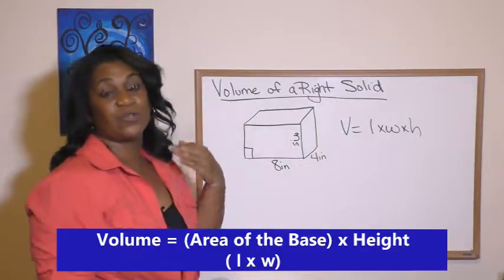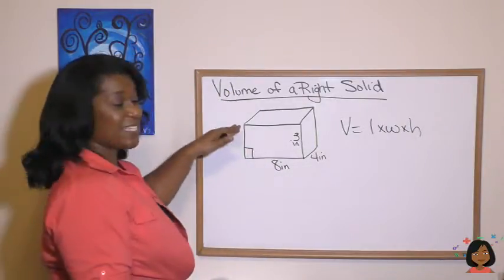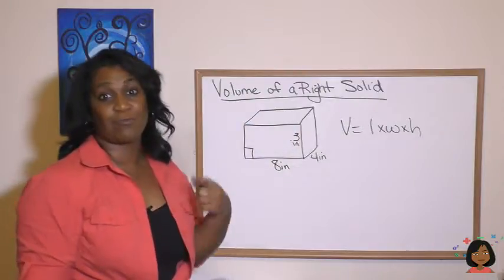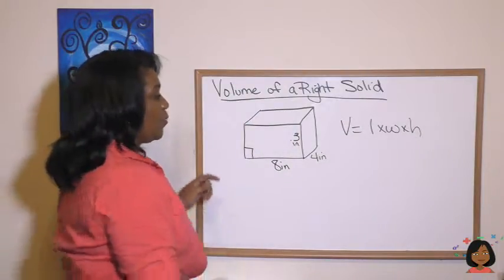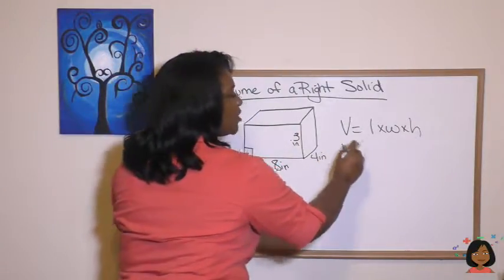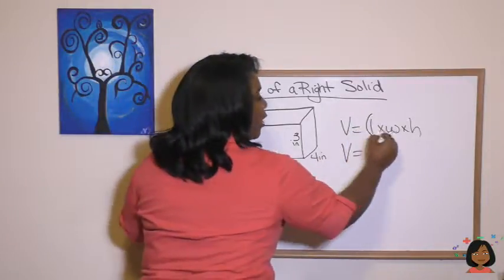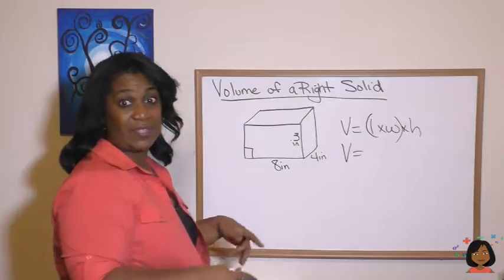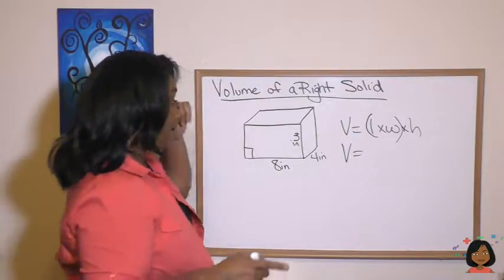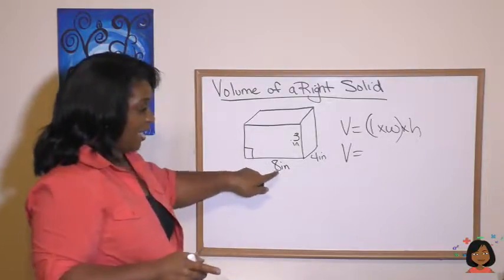Now we're going to use what we know about the volume of a rectangular prism to apply it to a bunch of other right solids. So we're going to regroup how we look at this formula. And we're going to say we know that length times width is area, right? It's area of the base, 8 times 4.